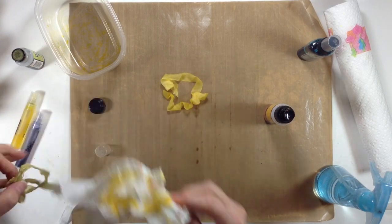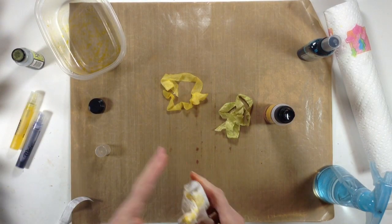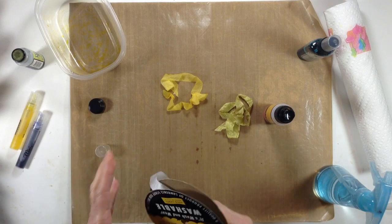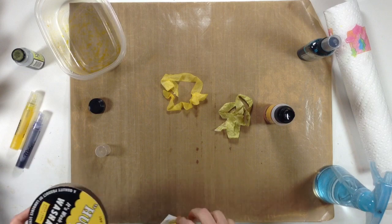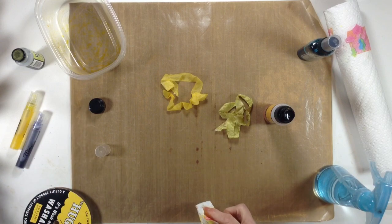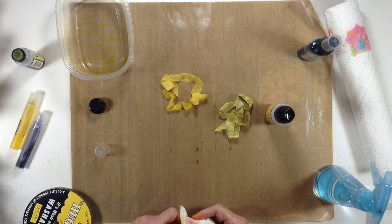So there you have it everybody. That's how I color my seam binding. I like to do four or five yards at a time. That way I always have it handy, and I don't have to worry about stopping my project and dyeing some seam binding. I just spend a day and pick all the colors that you want.